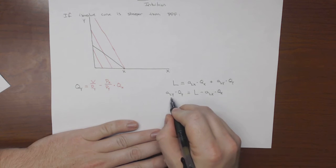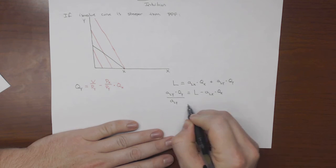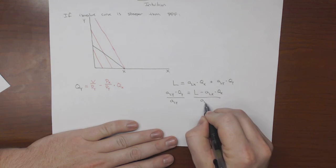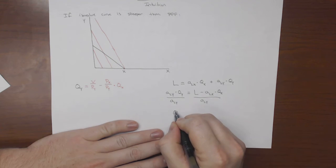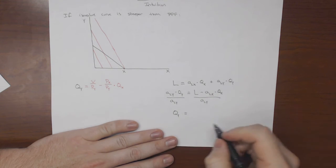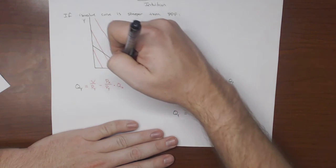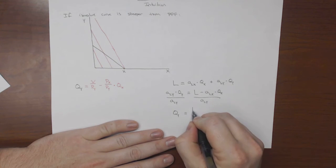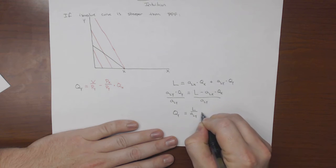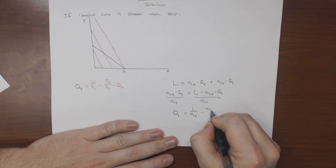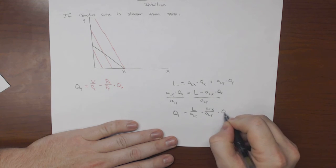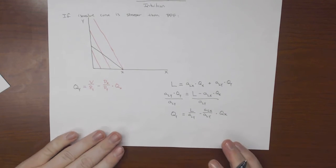And then we can divide both sides by aly. And this will give us qy is equal to, and I'm going to stick with black since we're talking about the black curve here, al over aly minus alx over aly, all times qx.